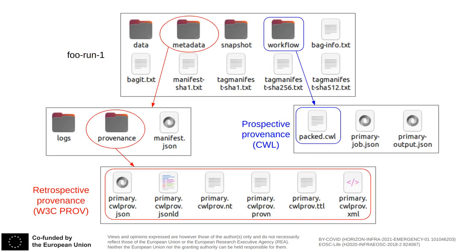This generates a directory containing several other directories and files. The data directory contains a copy of all inputs, intermediate outputs, and final outputs. The metadata directory contains information on the execution: which processes were run, when they started and ended, which data they manipulated, and so on. This is sometimes called retrospective provenance, while the workflow itself is referred to as prospective provenance, or the plan for what needs to be executed.